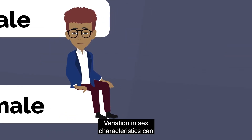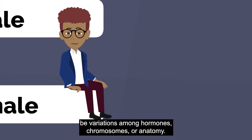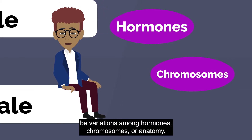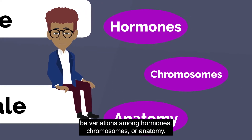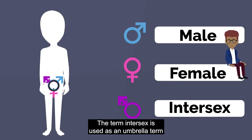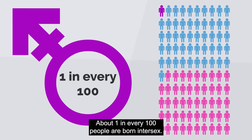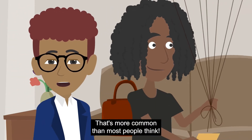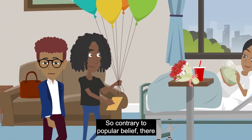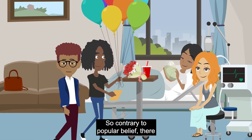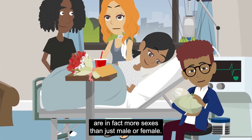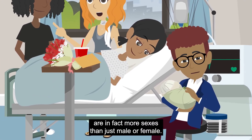Variation in sex characteristics can include variations among hormones, chromosomes, or anatomy. The term intersex is used as an umbrella term for those born with varying sex characteristics. About one in every 100 people are born intersex — that's more common than most people think. So contrary to popular belief, there are in fact more sexes than just male or female.